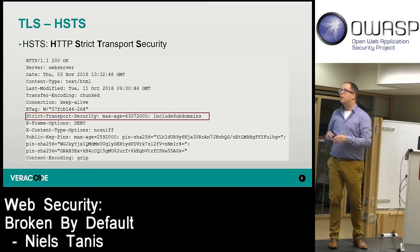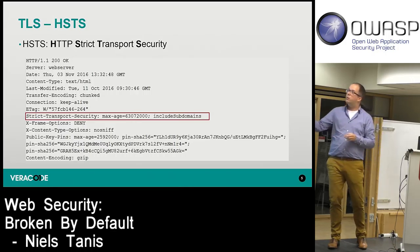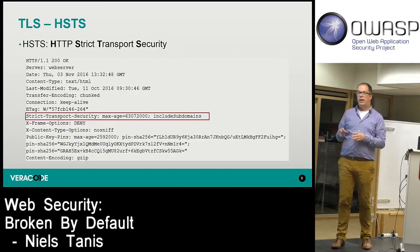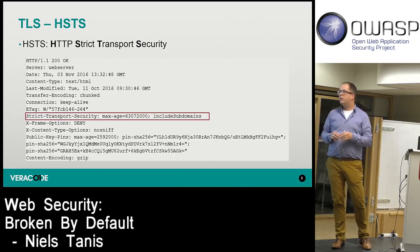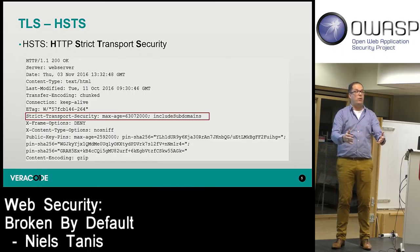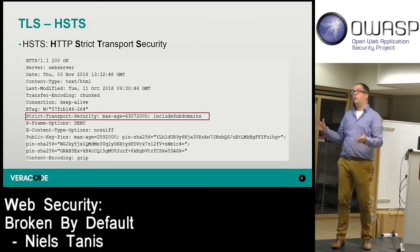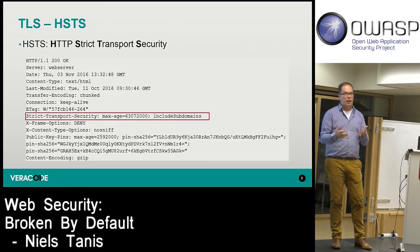The Strict-Transport-Security header tells the browser that a specific domain is only allowed to be contacted over TLS. It has attributes for max-age and can include subdomains. As soon as somebody types a plain-text address, the browser will not send out that request — it will immediately put you on an encrypted channel before the request even leaves the browser.